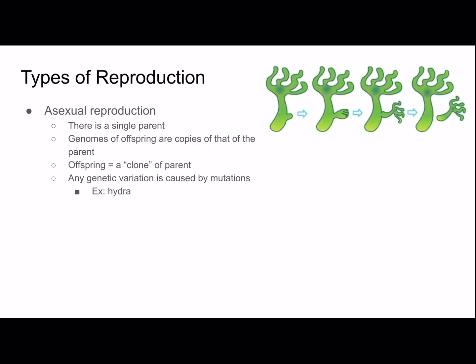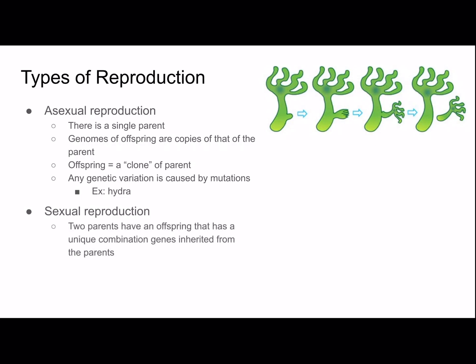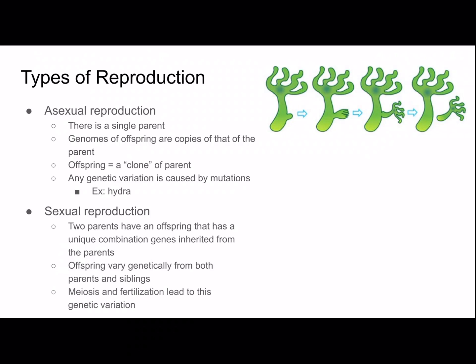As you can see in the picture, the offspring will bud off from the parent and they seem virtually genetically identical. Sexual reproduction is the opposite: two parents have an offspring that has a unique combination of genes inherited from the parents. The offspring varies genetically from both parents and siblings, and meiosis and fertilization lead to this genetic variation.